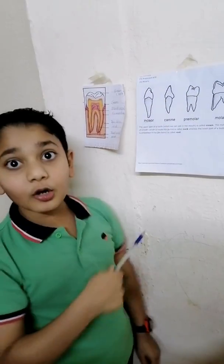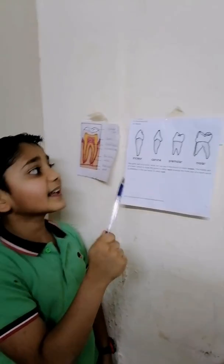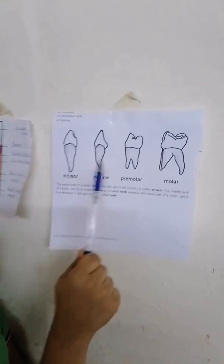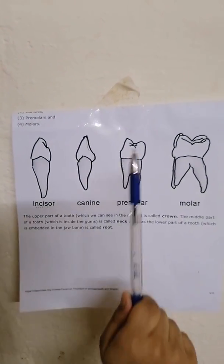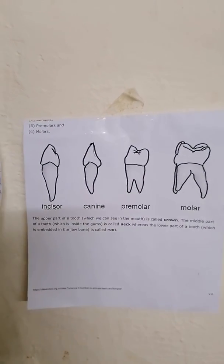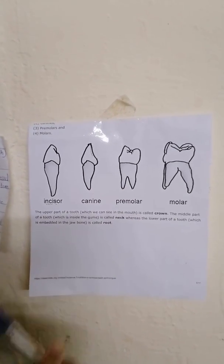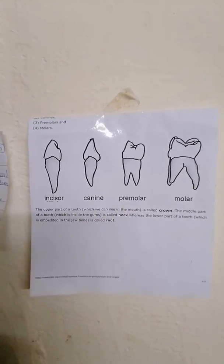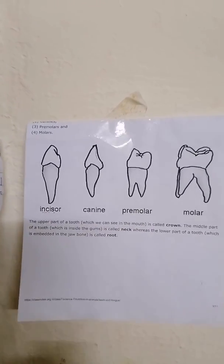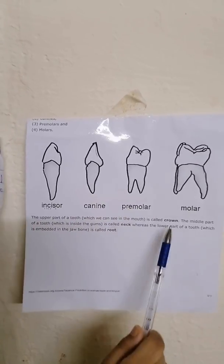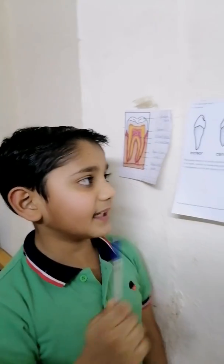And now the next is premolars. Premolars are broad and flat teeth. They are also called cracking teeth. Premolars help us to crack food, like we use premolars to crack nuts and many other things.